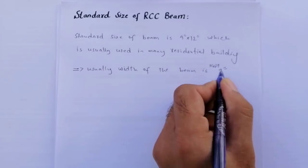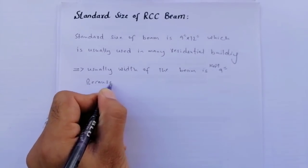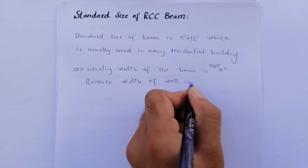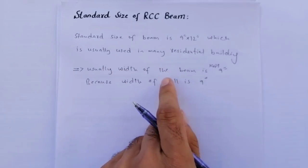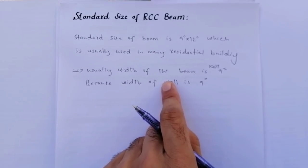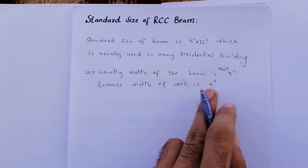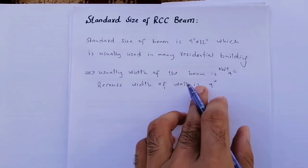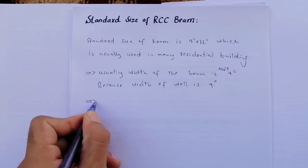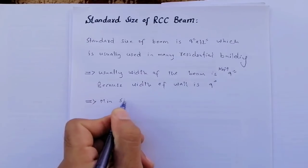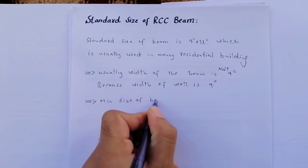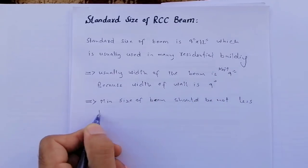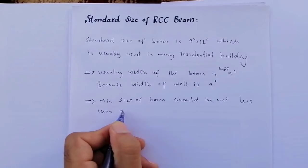The width of the beam is usually kept at 9 inch because the width of the wall is also 9 inch. If we provide a 9 inch width beam to match the 9 inch wall, it will look much better. One important point: the minimum size of a beam should not be less than 9 by 9 inch — this point is very important.